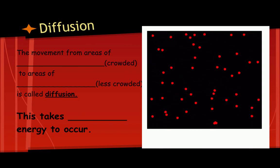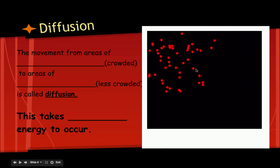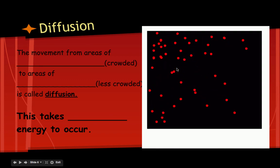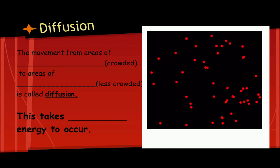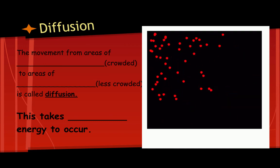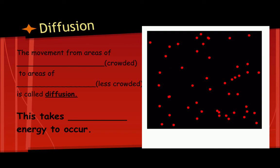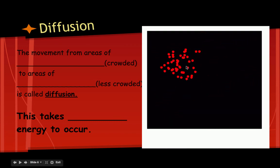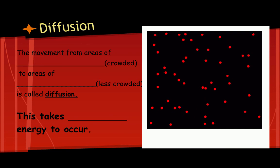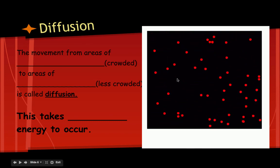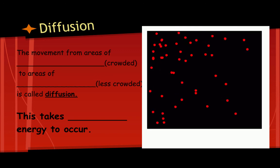High concentration means crowded; low concentration means less crowded. If you look at the animation, it starts out very concentrated and over time the molecules spread out. We did a demonstration in class where I put a drop of food coloring into a beaker of water. That food coloring starts out very concentrated and over time spreads out until it is evenly distributed throughout the entire beaker.